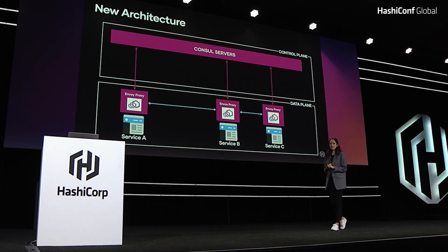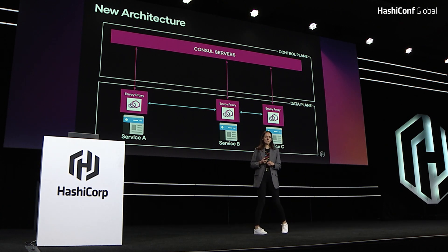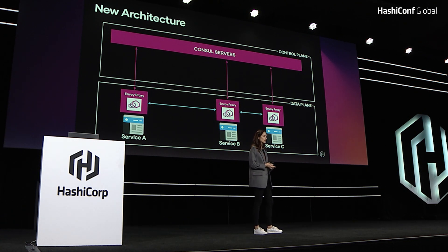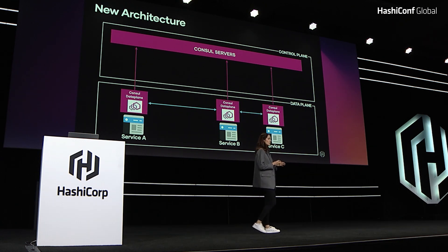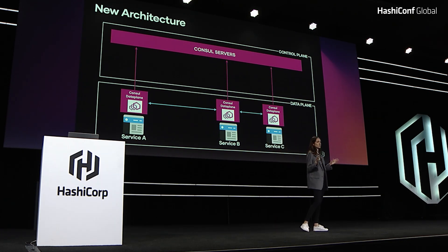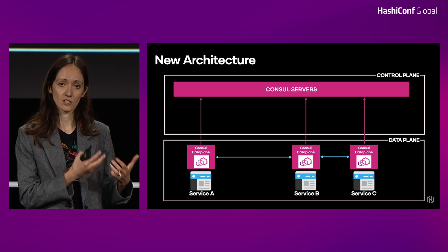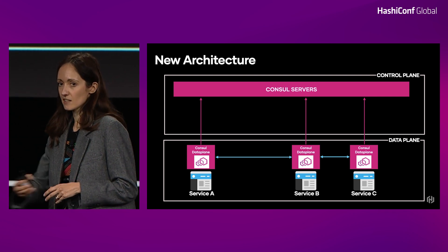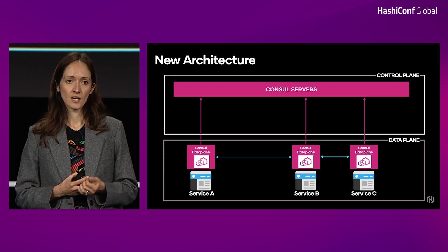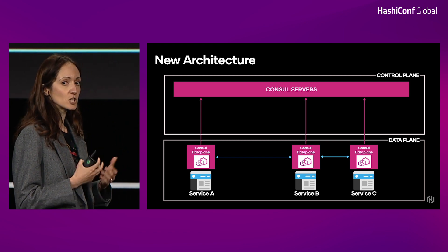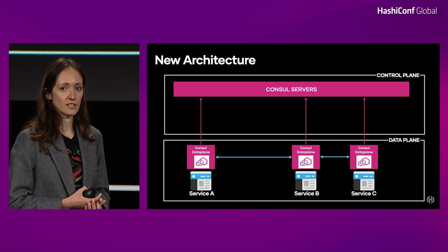Now we have our data plane talking directly to Consul servers — we don't need Consul clients anymore. The second change is that we're going to replace the plain Envoy proxy with a new component called Consul data plane. This Consul data plane is not exactly playing the role the Consul clients used to play, and it's not replacing the Envoy proxy. Instead, it's more like a wrapper around the Envoy proxy that, at the same time, knows how to talk to Consul servers at any given time.